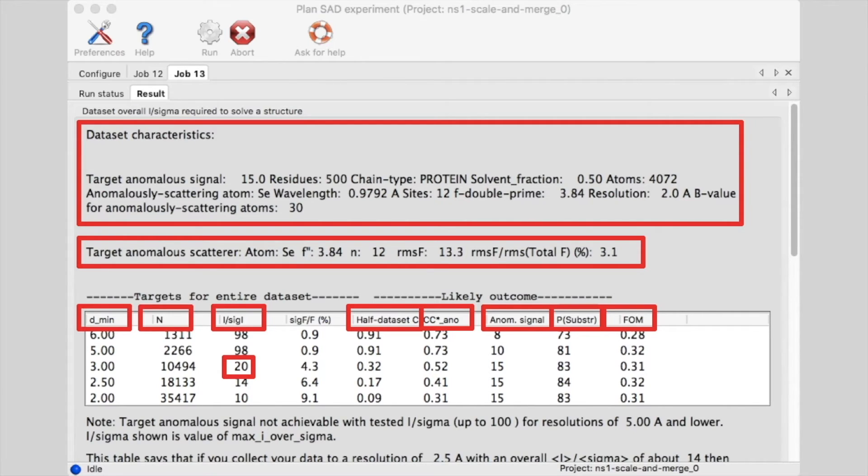In this case, a value of 20 for I over sigma is required to obtain a half-dataset correlation of 0.32 and the target anomalous signal of 15. The probability of solving a structure with this data would be about 83%.